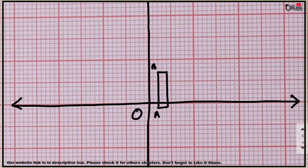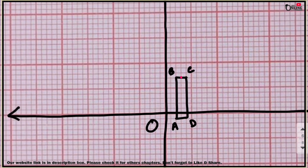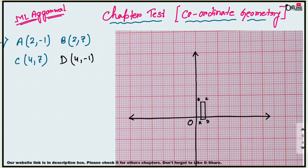Now for the next part, find the midpoint of BC. The coordinate of B is (2, 7) and the coordinate of C is (4, 7). Apply the midpoint formula: (4+2)/2 and (7+7)/2. That gives 6/2 = 3, so the midpoint of BC is (3, 7).